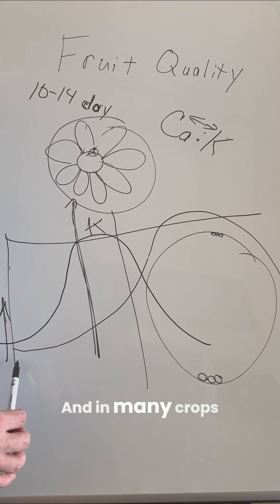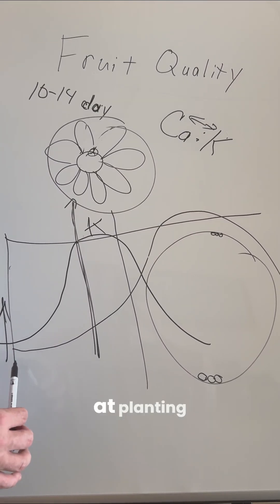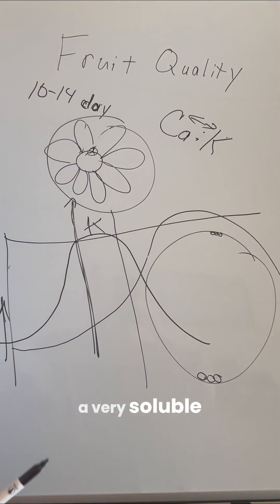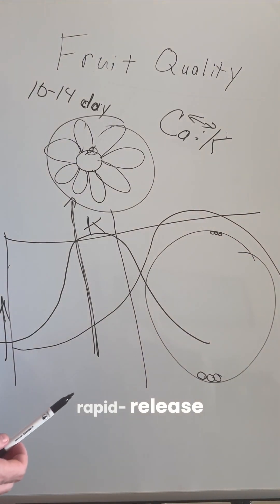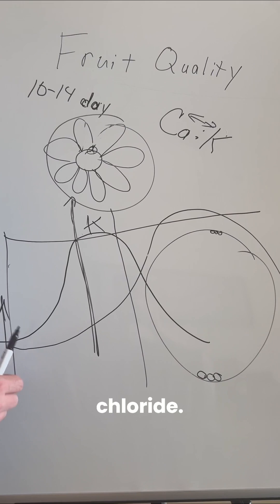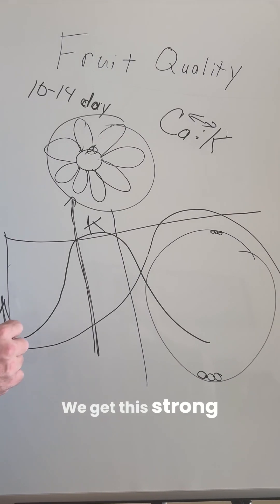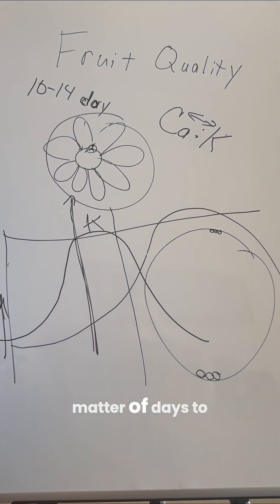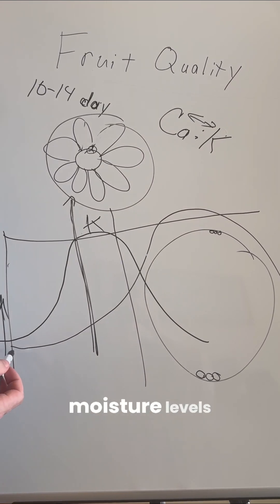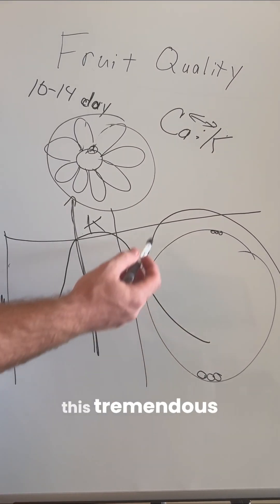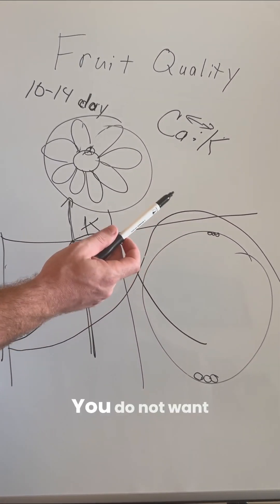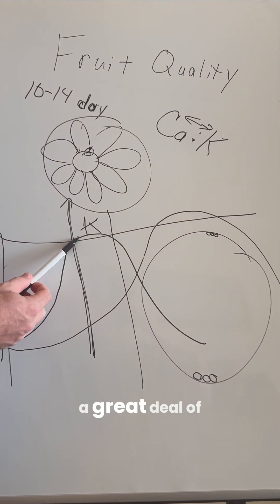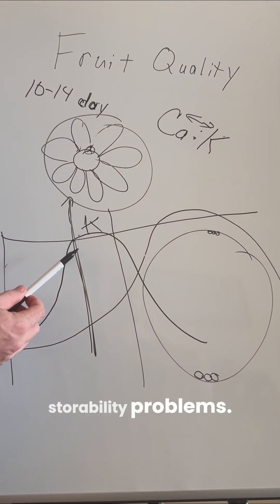In many crops it may not be appropriate to apply potassium at planting, but instead to delay — particularly if using a very soluble, rapid-release potash fertilizer such as potassium chloride. The release curve on potassium chloride is a matter of days to weeks depending on moisture level, producing a tremendous flush of potassium. You do not want that to happen during the cell division window, as it will cost you a great deal of fruit quality and storability.